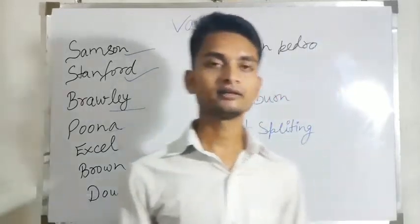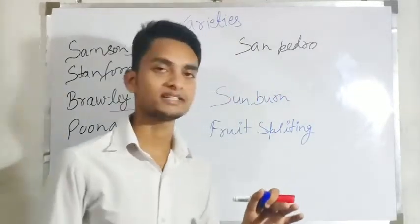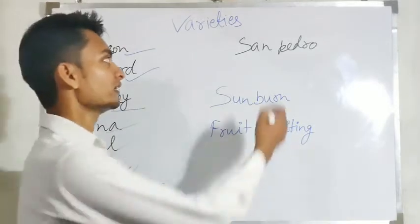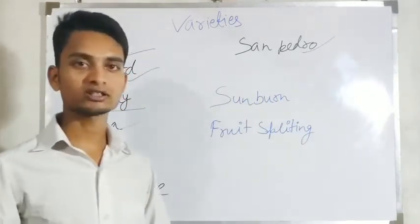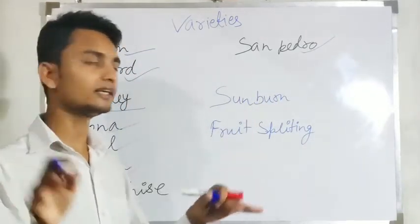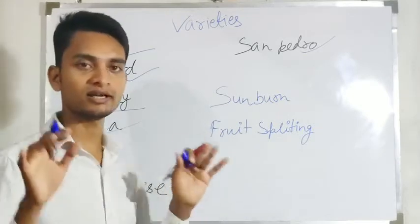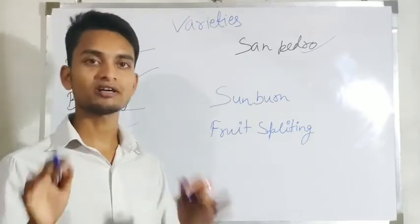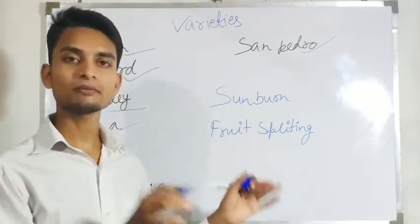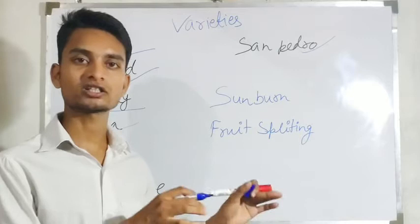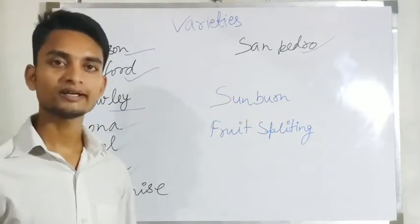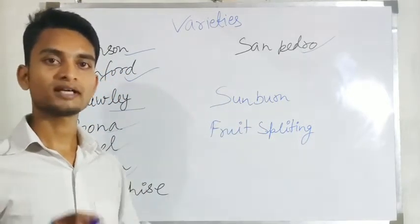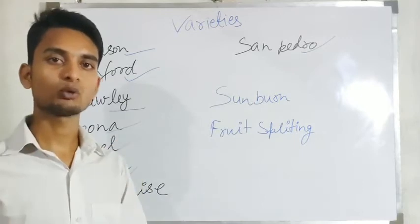The last variety is San Pedro. Now next is the disease — sunburn. Sunburn is a physiological disorder of fig, and it is due to excess of pruning.